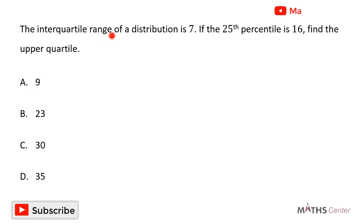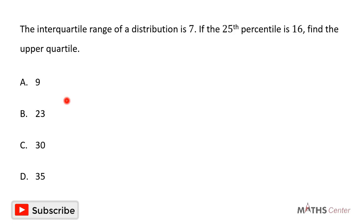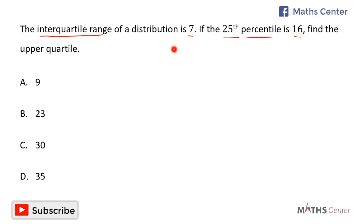The interquartile range of a distribution is 7. If the 25th percentile is 16, find the upper quartile. This is a multiple choice question, so we will solve the question and after that pick the correct option. The interquartile range is 7 and the 25th percentile is 16; we will use this information to find the upper quartile.